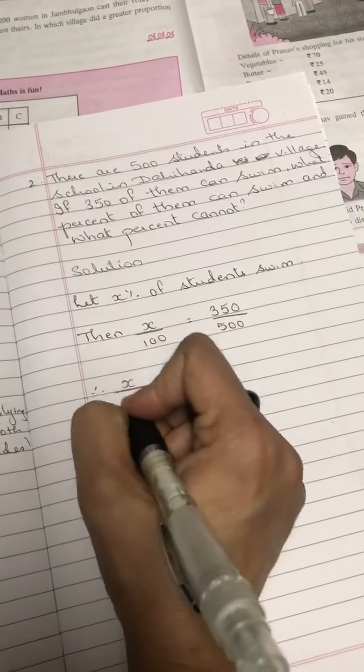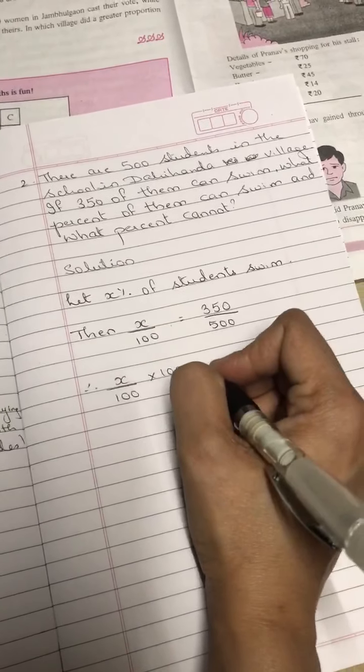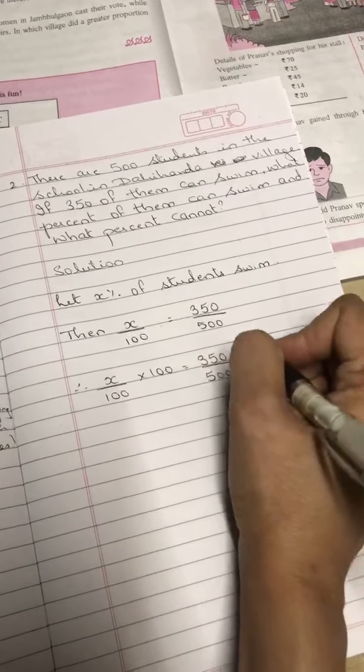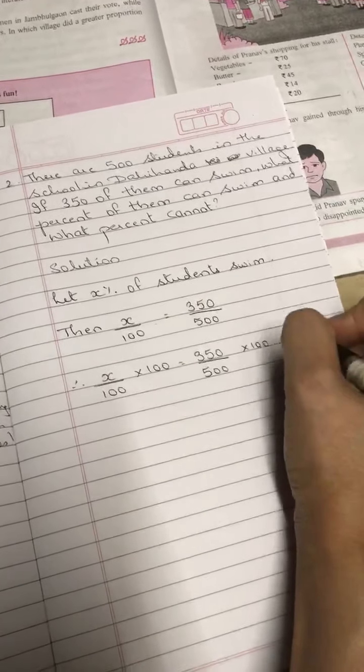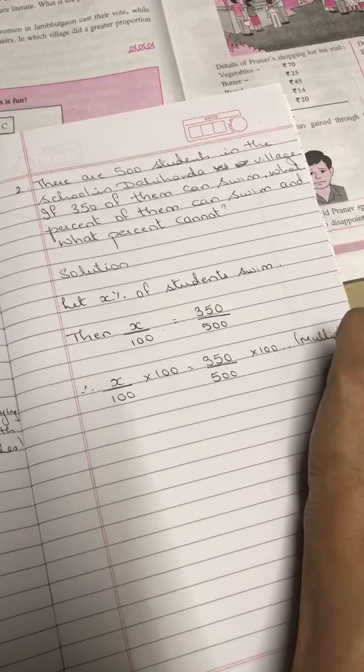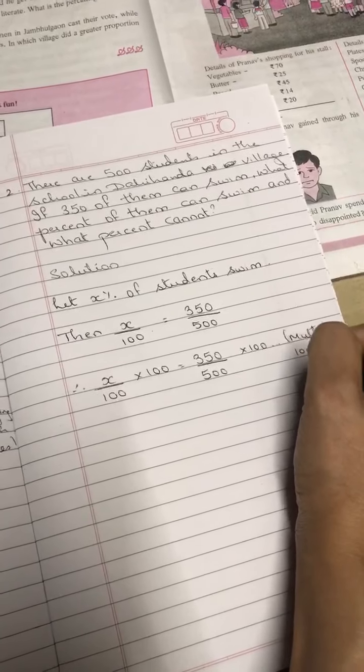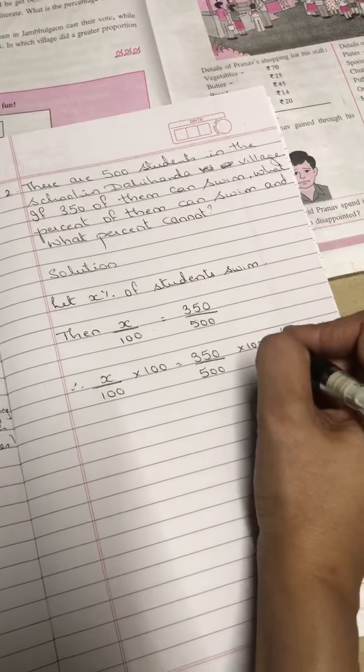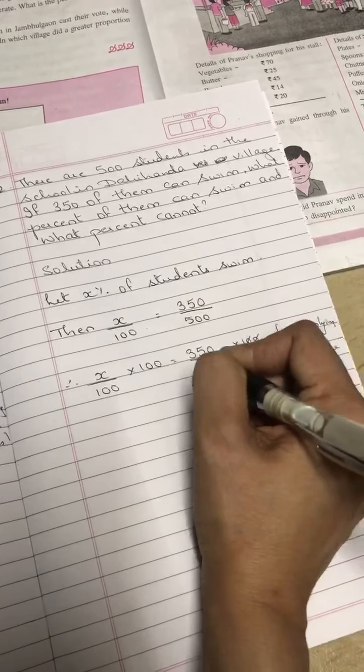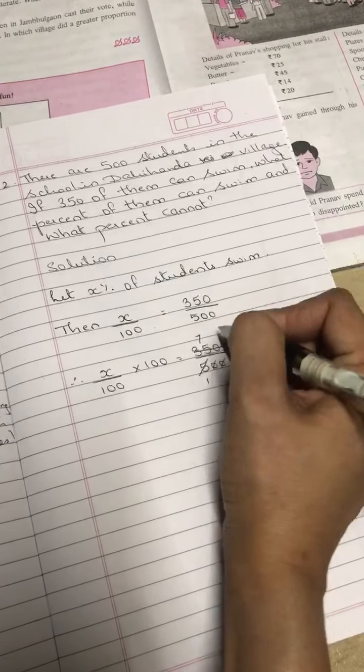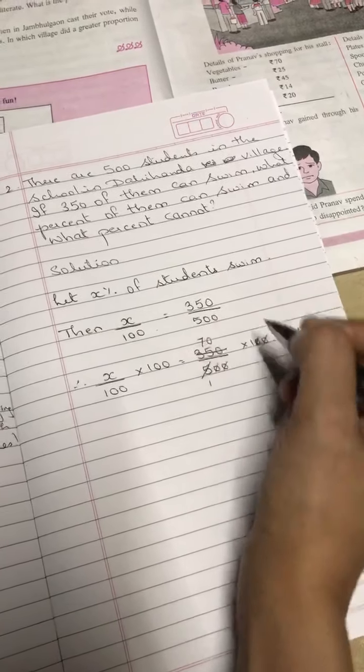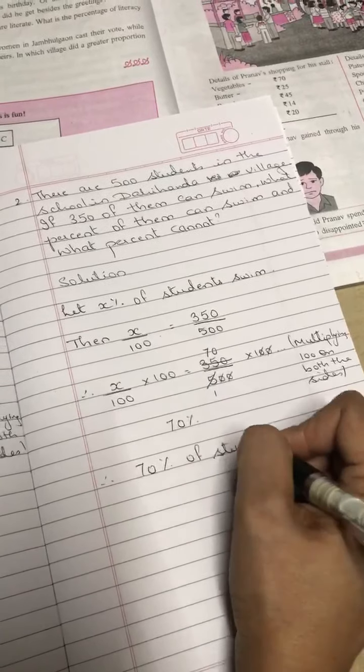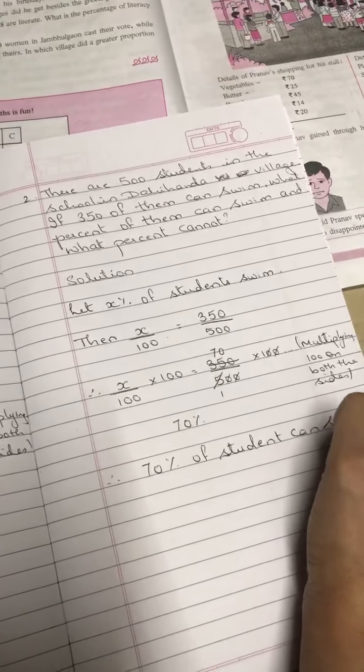Therefore, x over 100 into 100 is equal to 350 upon 500 into 100. Multiplying 100 on both sides, so 0 goes, 0 goes, 5 ones are 5, 5 sevens are 35, and they are 0. So 70 percent.